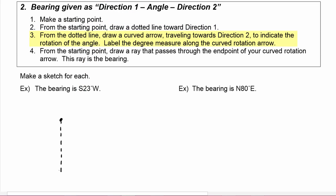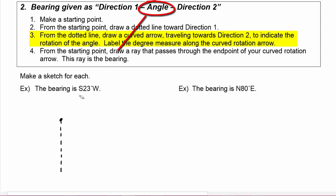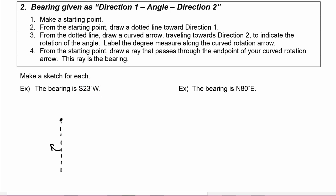Step three says from the dotted line, draw a curved arrow traveling towards direction two. Direction two in our case is west, so we're going to be drawing a curved arrow traveling west to indicate the rotation of the angle. The angle in our case is 23 degrees, so from our dotted line we draw a curved arrow traveling 23 degrees towards the west, and we label the picture with the 23 degrees.